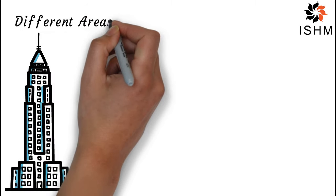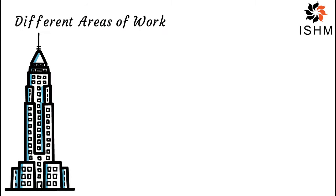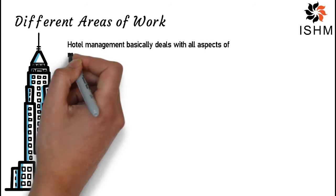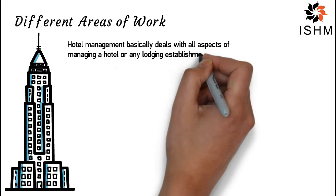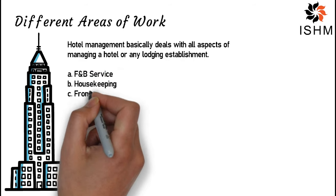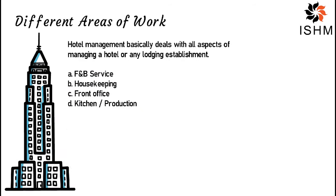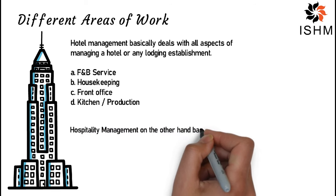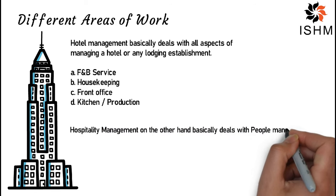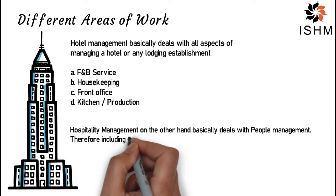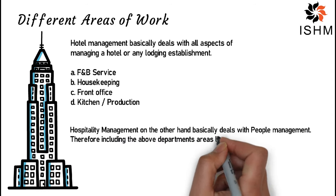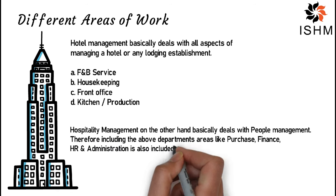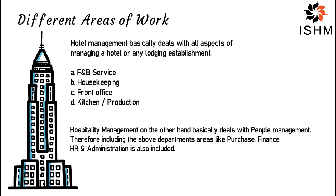Different areas of work: hotel management basically deals with all aspects of managing a hotel or any lodging establishment. The main departments include food and beverage service, housekeeping, front office, and kitchen. Whereas hospitality management, on the other hand, deals with people management, and therefore other departments like purchase, finance, human resources, and administration are also included.